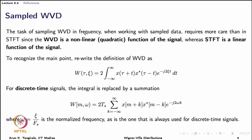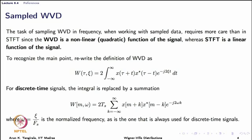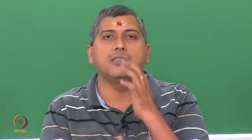Why does the Wigner-Ville distribution, or why does the sampling of Wigner-Ville distribution, call for special attention? Well, the prime reason is that the Wigner-Ville distribution is a non-linear function of the signal. Just look at equation 1 — it is fairly clear that it is a quadratic function of the signal, which means it is a non-linear function, whereas a short-time Fourier transform is a linear function of the signal. Whenever you are sampling linear functions of signals, you are okay using the sampling theorem for the signal itself. But in the case of Wigner-Ville, that is not the case, and we will try to understand why this non-linearity presents a challenge or an additional issue.